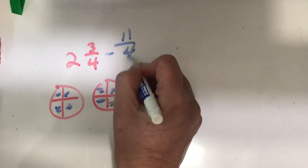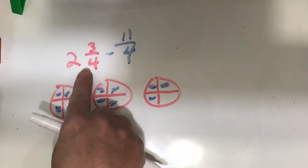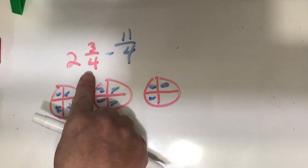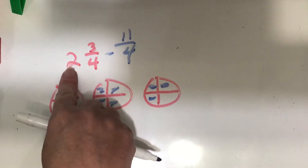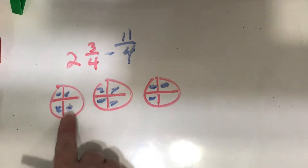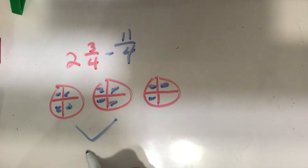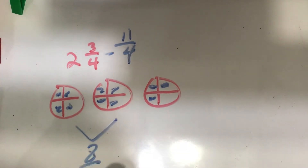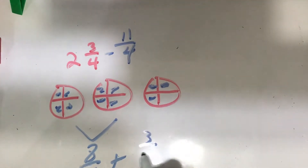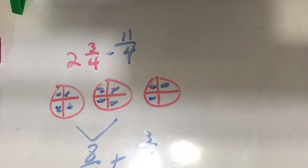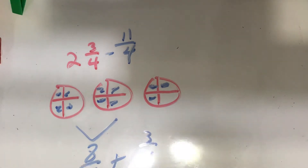Because I know that each whole has four-fourths, because my denominator is four. And I have two wholes, so two times four is eight. Here are my eight-fourths right here, plus my three-fourths right here, equals eleven-fourths. So two and three-fourths equals eleven-fourths.